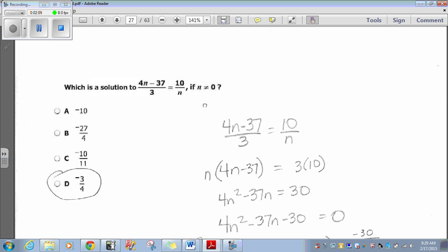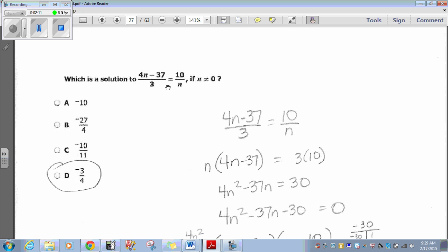Anyway, one of the easiest ways to take care of problems like this. Whenever you have a fraction equaling a fraction, easiest way to just cross multiply. Easiest way. So, this would be N times 4N minus 37. That would be 30.